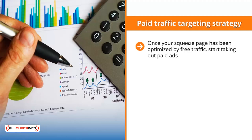Paid traffic targeting strategy: once your squeeze page has been optimized by free traffic, start taking out paid ads. Don't jump in with both feet and place $100-a-day ads on Facebook or Google AdWords. Instead, optimize your squeeze page and your mailing list to paid traffic using small targeted ad buys. Start with one-dollar daily buys, pay attention to your statistics, and see if people are really converting at a high enough rate. Keep tweaking your squeeze page until your one-dollar ad buys convert at a fairly high rate.